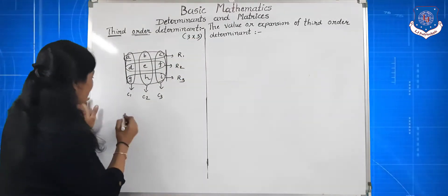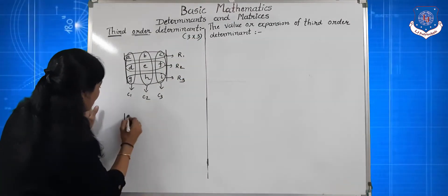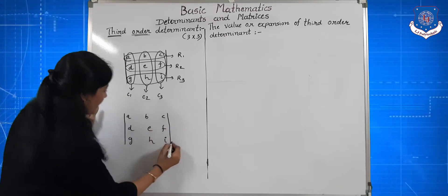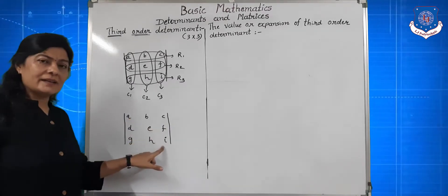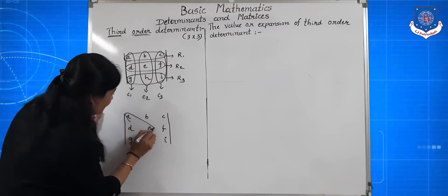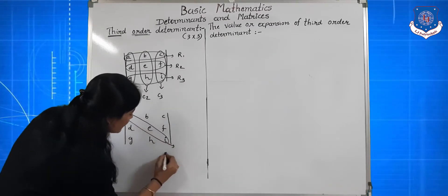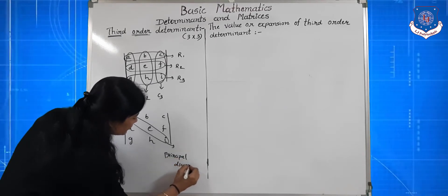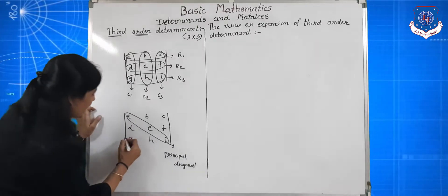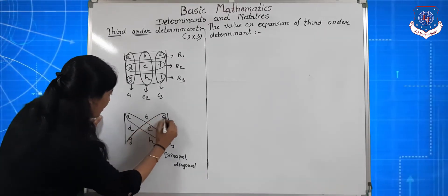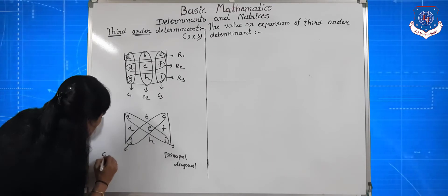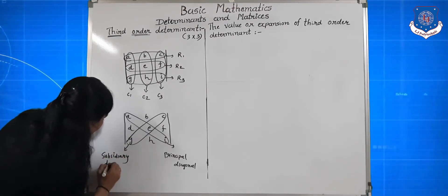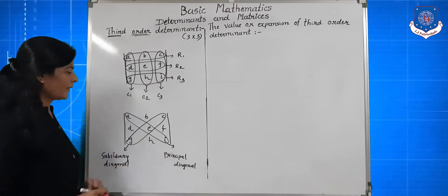In this determinant a, b, c, d, e, f, g, h, i — the elements a, e, i are the elements of the principal diagonal of the third order determinant. And the remaining diagonal elements are the elements of the subsidiary diagonal.